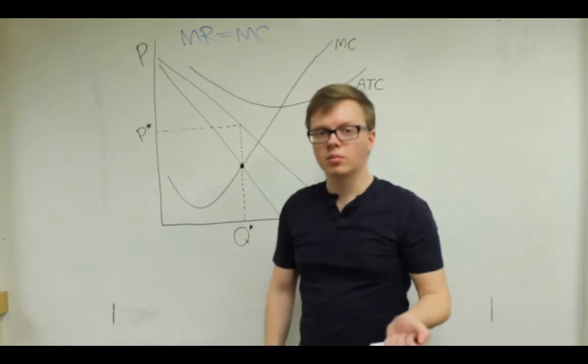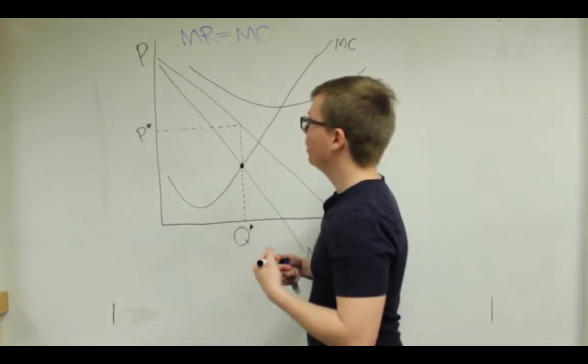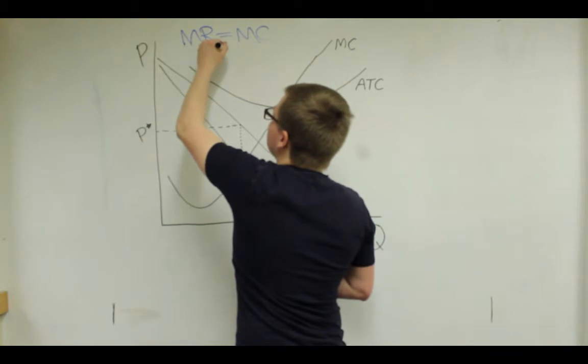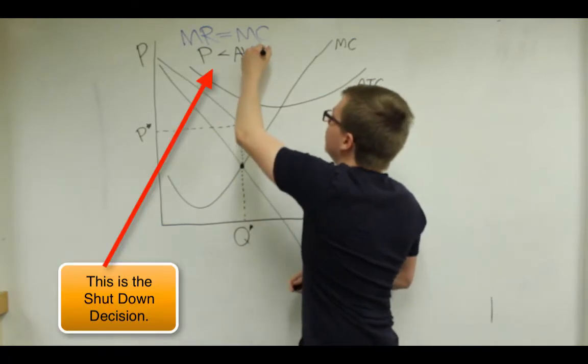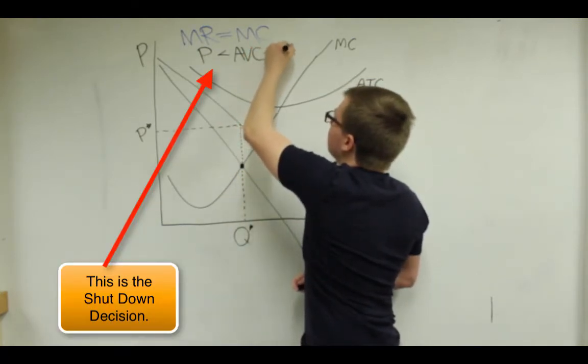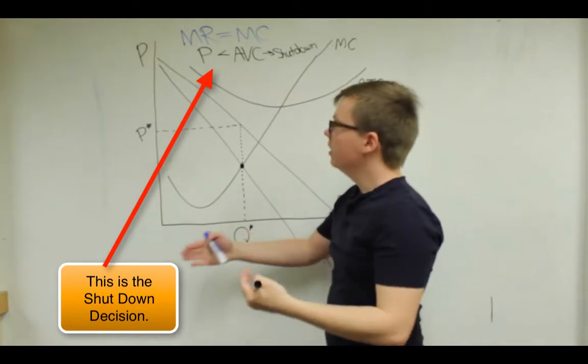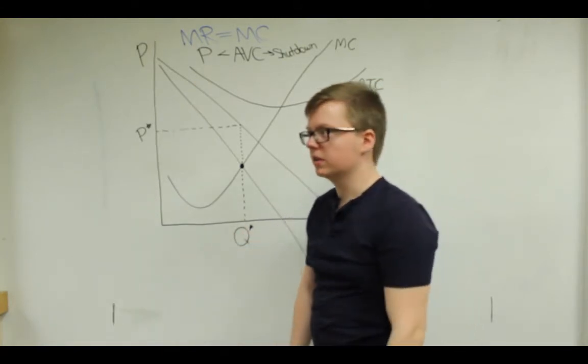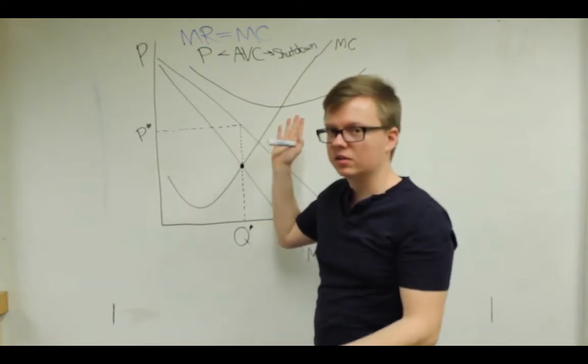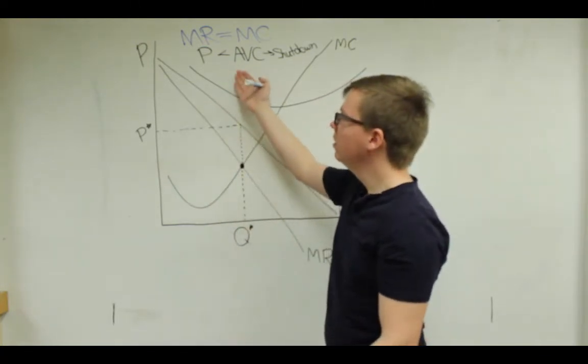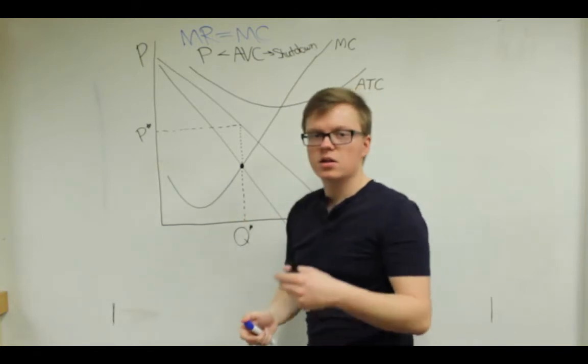The other thing you need to be careful about in problems like these is that sometimes the firm will choose not to produce at all. And they do that when price is below their average variable cost. We usually call that the shutdown decision. It just means that it would be better for the firm to produce nothing at all and only pay their fixed costs. So in this particular problem, we don't have the average variable costs or fixed costs depicted on this graph, so we can't tell. But we're going to assume that price is greater than or equal to average variable costs so that they will produce.